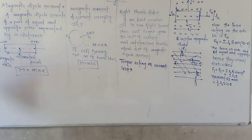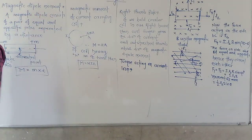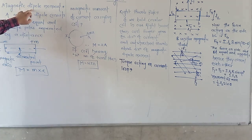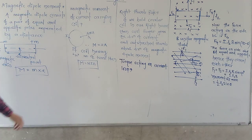Hello students, today we are going to discuss the next topic which is Magnetic Dipole Moment of a Magnet on a Circular Coil.